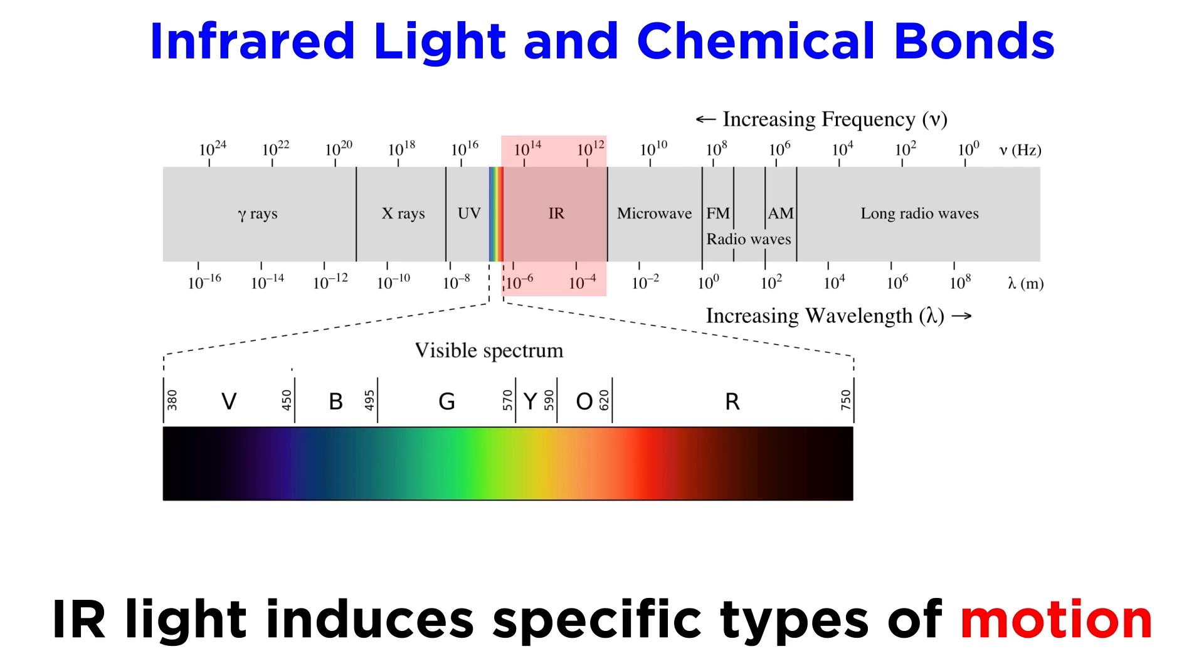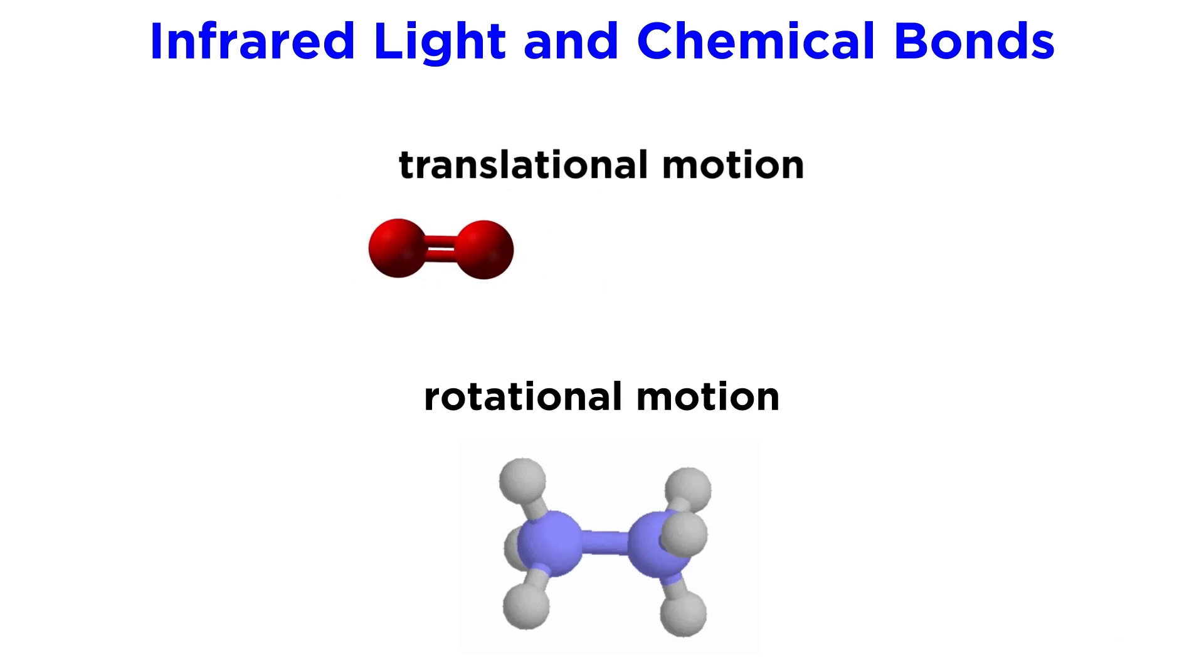The reason we do this is that infrared light is able to induce specific types of motion in the molecules in the sample. We already know that molecules are involved in translational and rotational motion. Translational motion allows molecules to move around in space with respect to each other, and rotational motion allows for all the sigma bonds in the molecule to be rotating all the time, producing the various conformations.